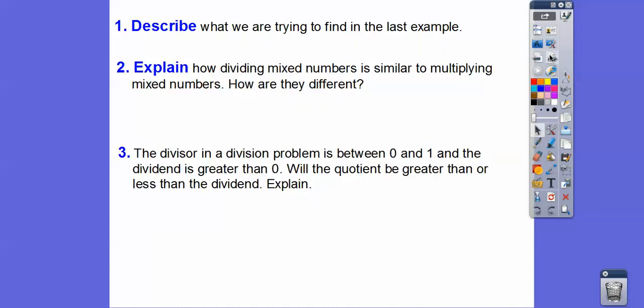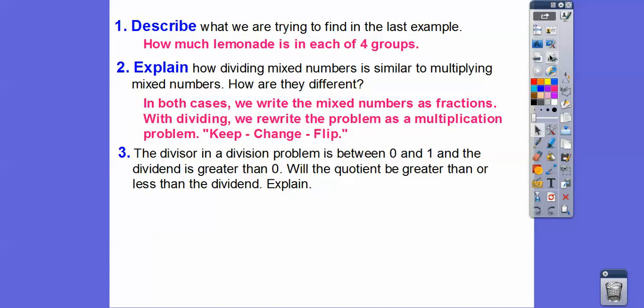Let's answer a few more questions. Describe what we were trying to find in that last example — that was the lemonade one, so how much lemonade was in each of the four groups? Explain how dividing mixed numbers is similar to multiplying mixed numbers and how they're different. It's similar because in both cases we write the mixed numbers as fractions. Where it's different is when we divide, we rewrite the problem as a multiplication problem — and we do that keep, change, flip part.